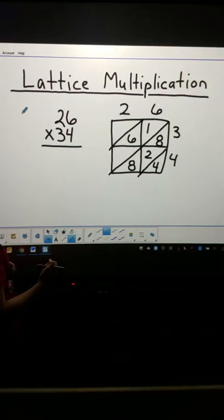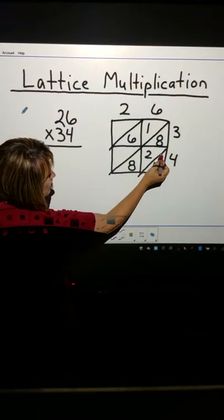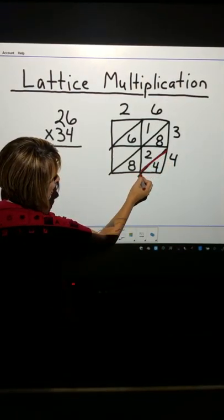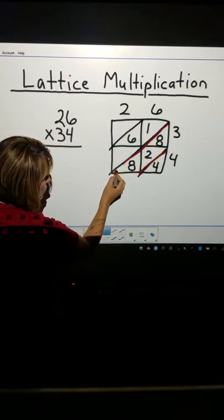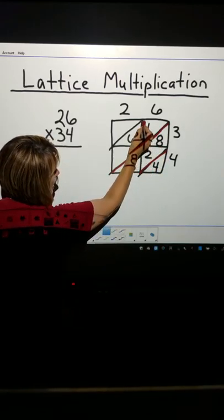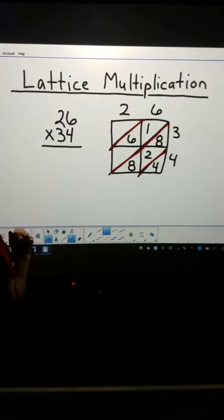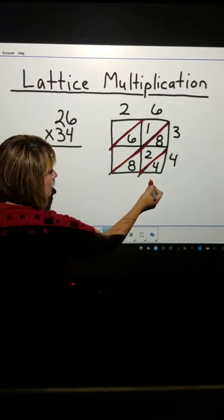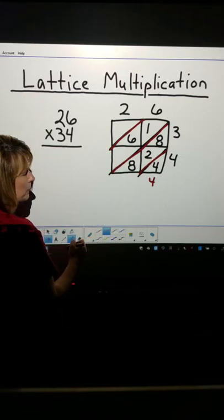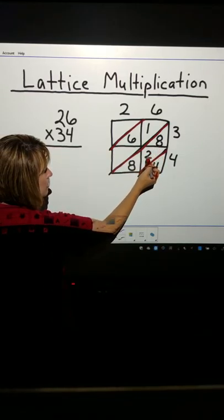Now, I'm going to use my addition skills. If you look closely, diagonally, there's a section here, there's a section here, and there's a section here. I'm going to add diagonally within sections. 4, there's nothing else, it's just going to be a 4.